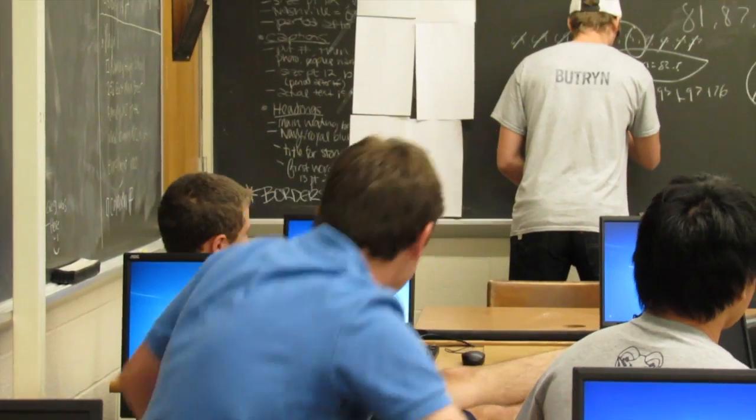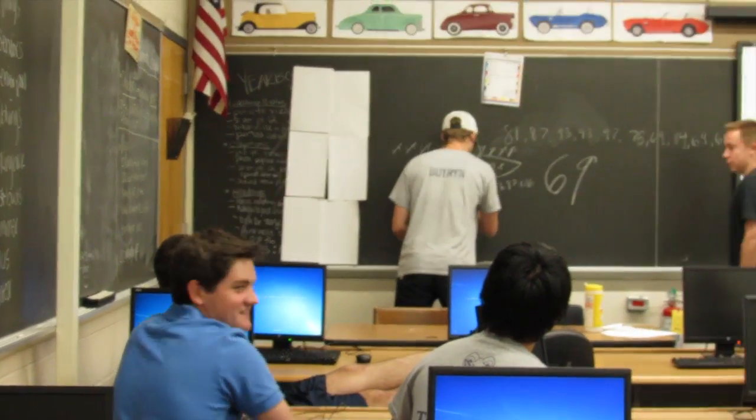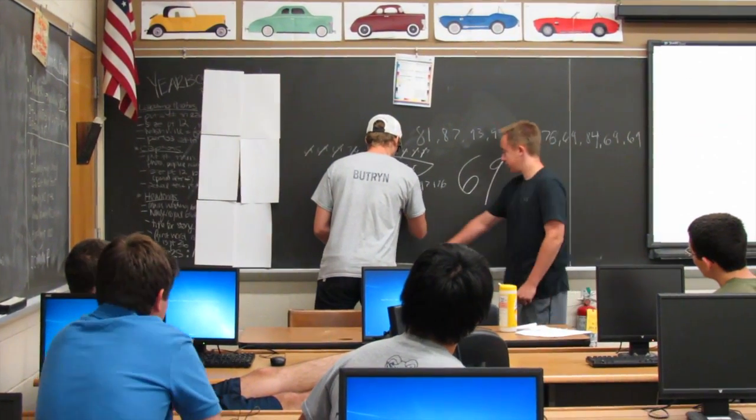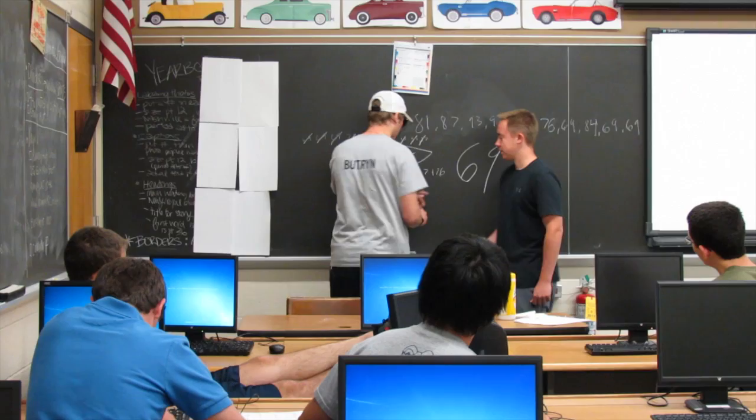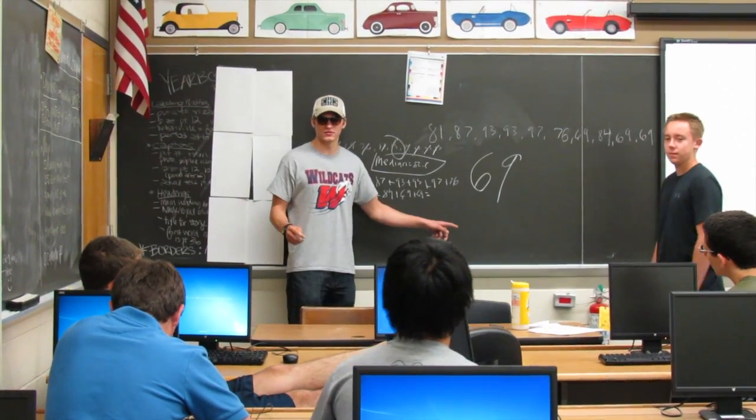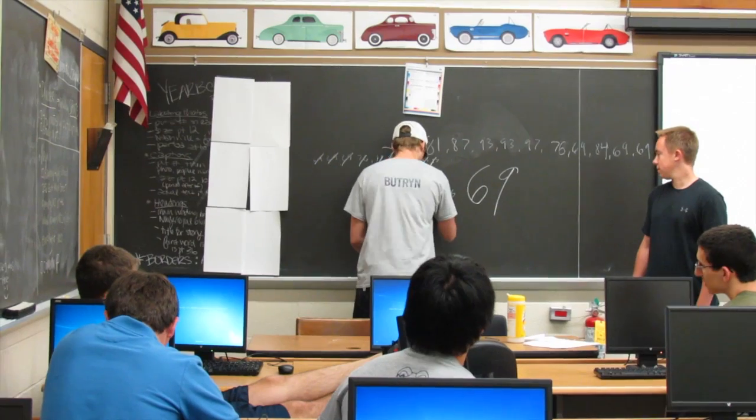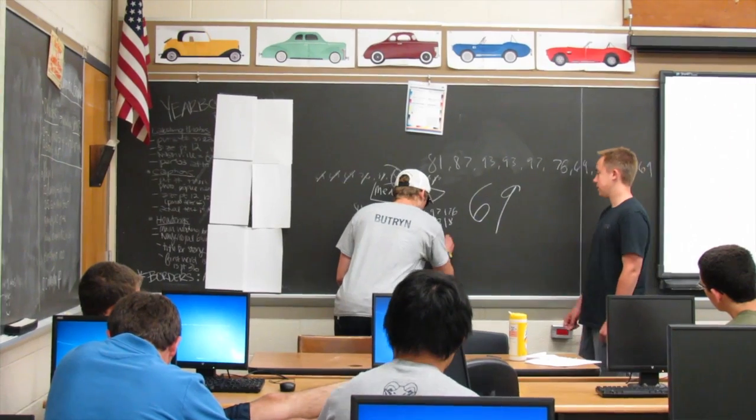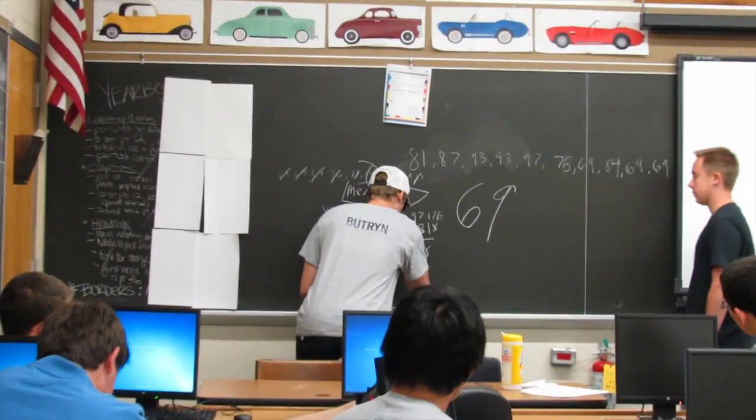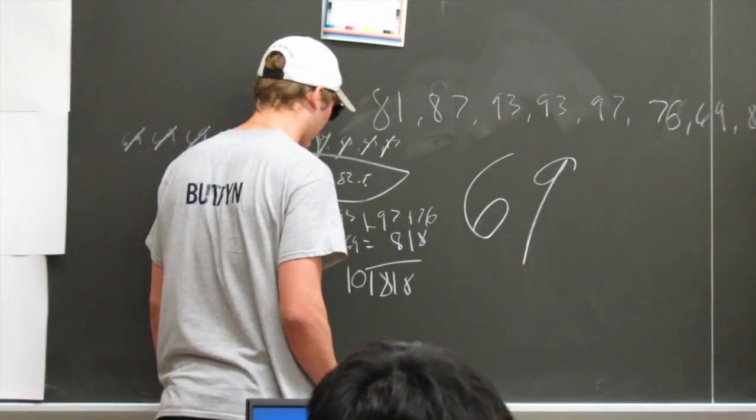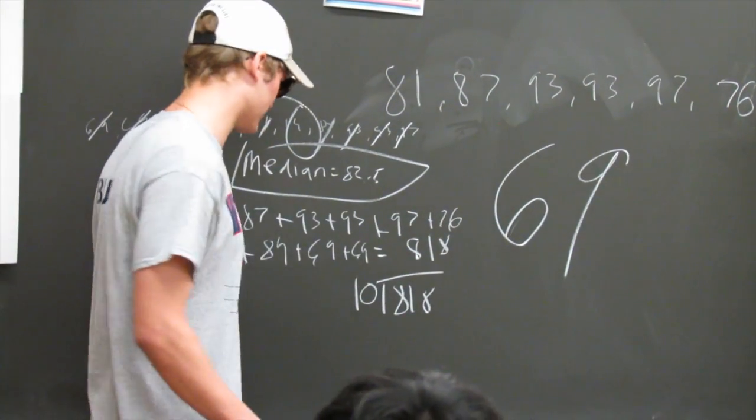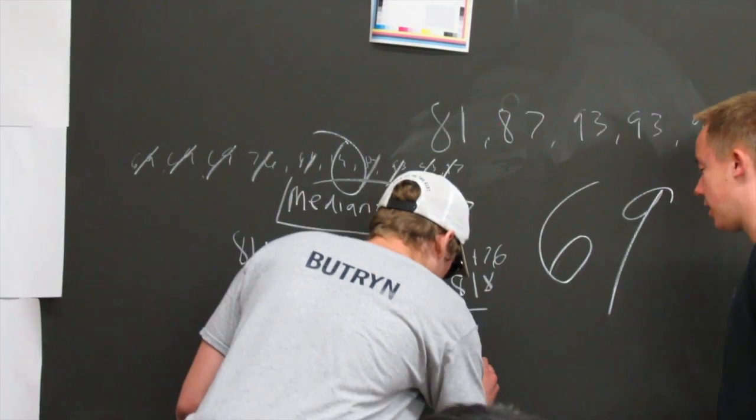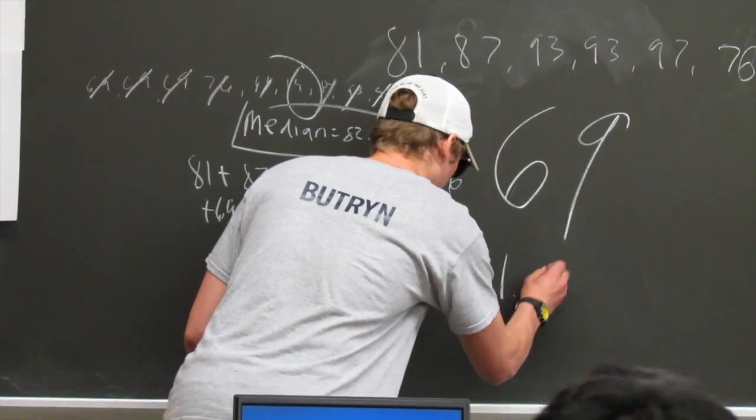Hold on, I'm not done yet. 81.8. Not done yet. So 818 divided by 10 equals 81.8. And that's the mean. The mean is 81.8.